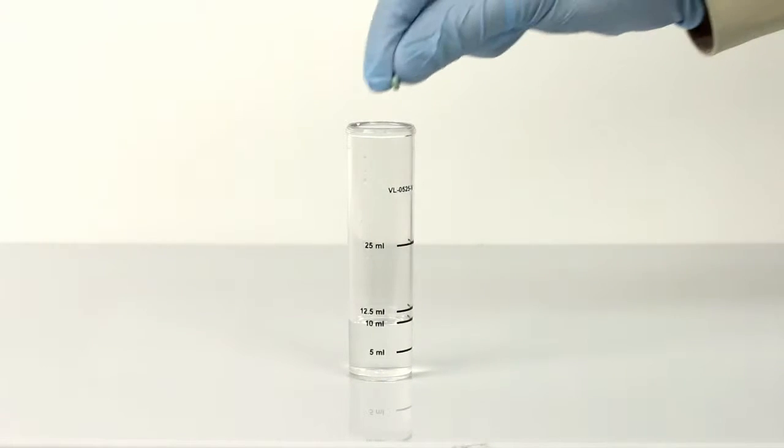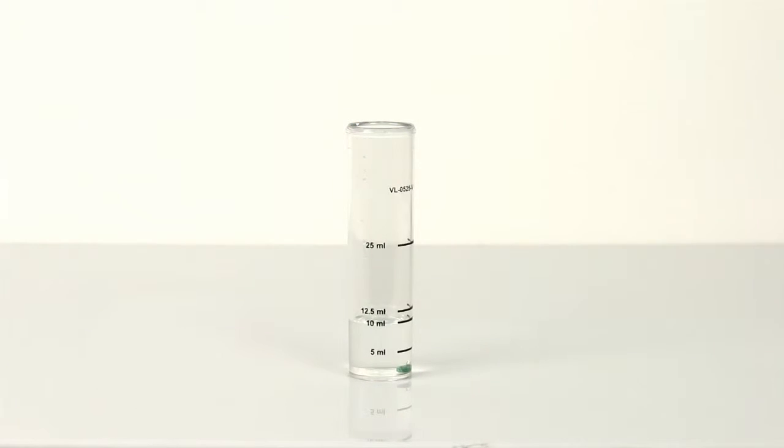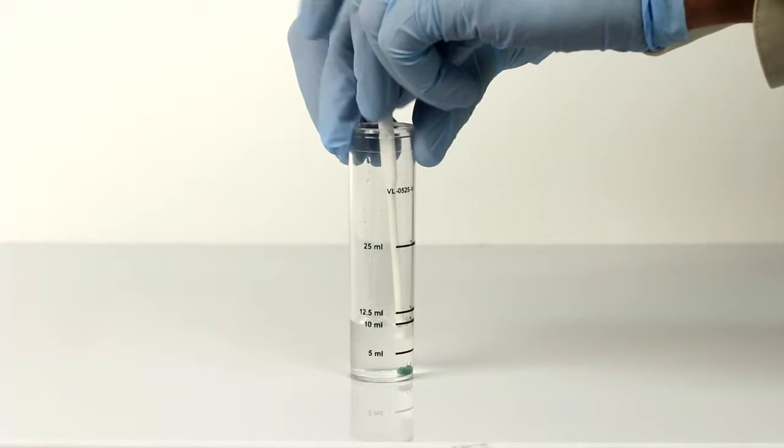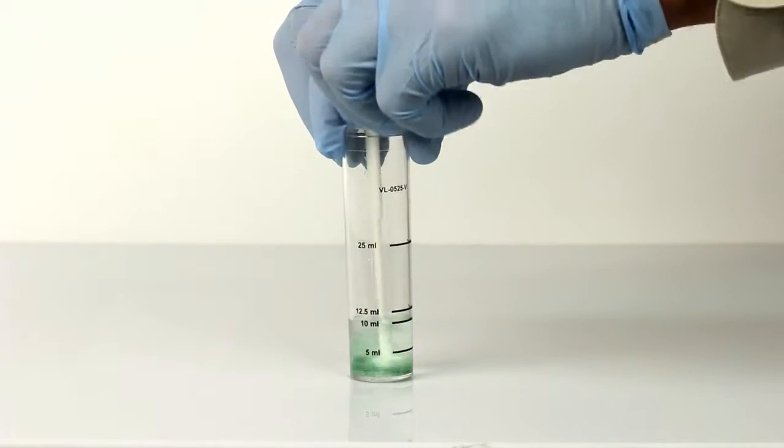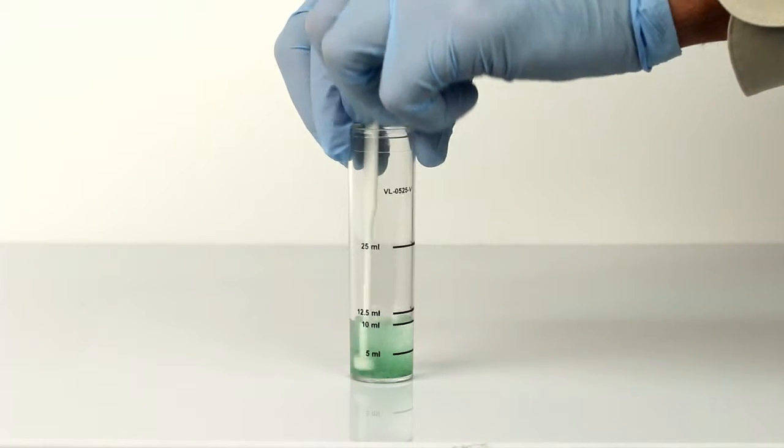The next step is to add one OP tablet. After you add the tablet to your sample, use the Tablet Crusher to help dissolve the tablet. Swirl the vial to mix. A green color will develop.